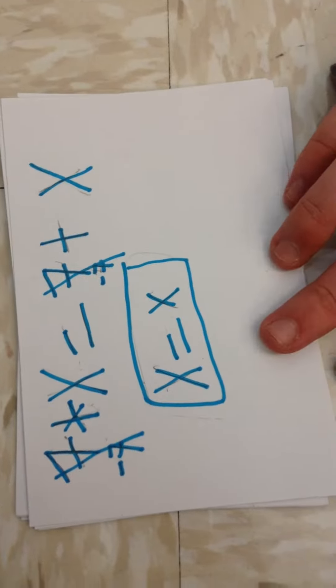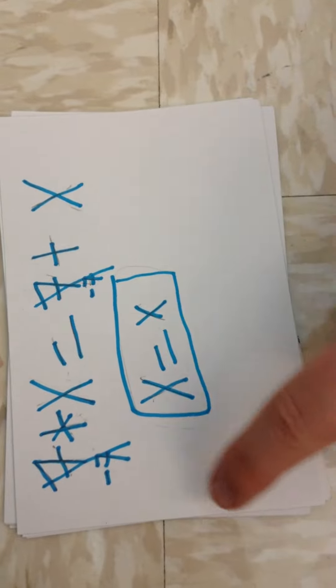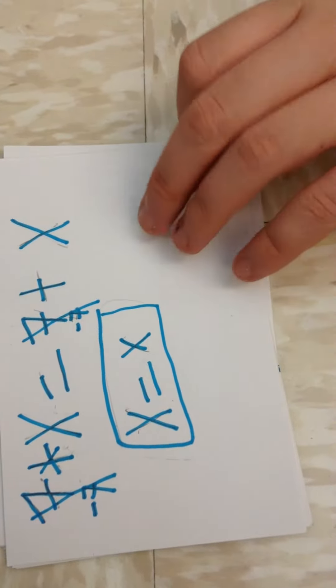And so for this one, because this is positive, you have to subtract 7 from both sides, and then you get x equals x.